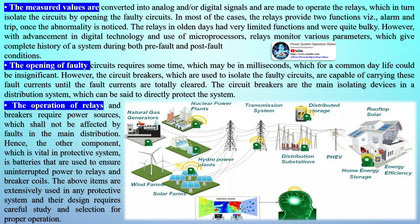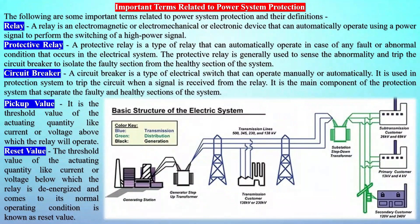Accurate protection cannot be achieved without properly measuring the normal and abnormal conditions of a system. In electrical systems, voltage and current measurements give feedback on whether a system is healthy or not. Voltage transformers and current transformers measure these basic parameters and are capable of providing accurate measurement during fault conditions without failure. The measured values are converted into analog and/or digital signals and are made to operate the relays, which in turn isolate the circuits by opening the faulty circuits. In most cases, the relays provide two functions: alarm and trip, once the abnormality is noticed.